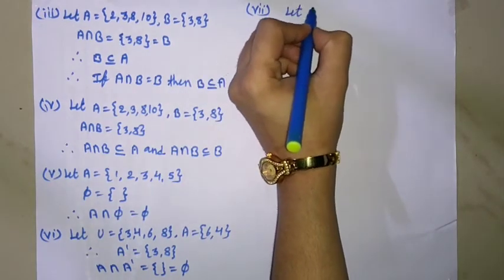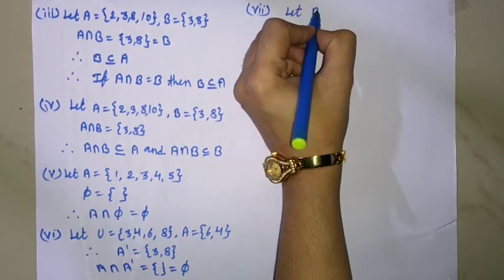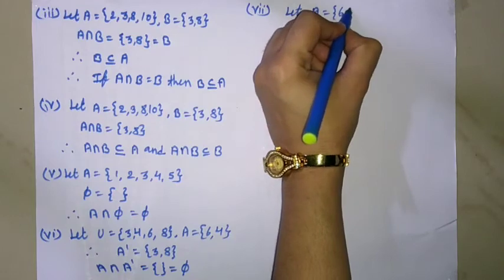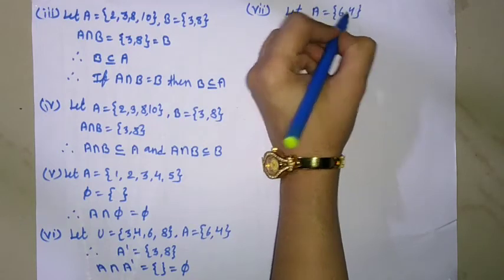Let A equal to {6, 4}. Therefore A intersection A equal to {6, 4}, which is set A itself, verifying the seventh property.